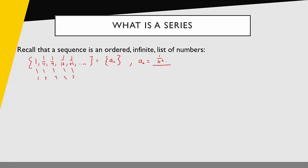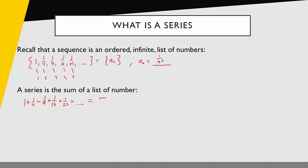What does that have to do with series? Well, a sequence is an ordered infinite list of numbers. A series is the sum of a list of numbers. So if I start with this sequence, I can generate the associated series that looks like 1 plus 1/4 plus 1/9 plus 1/16 plus 1/25 plus so on and so forth. I can represent this using sigma notation, which says add up all of the expression 1 over n squared for n values going from 1 to infinity.